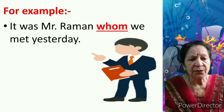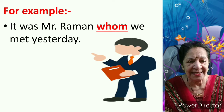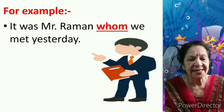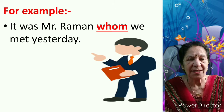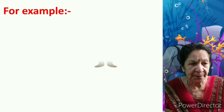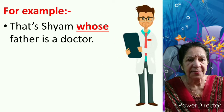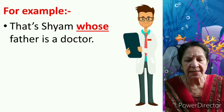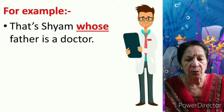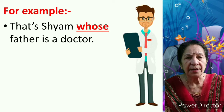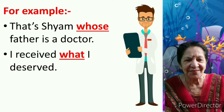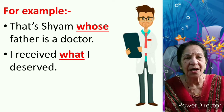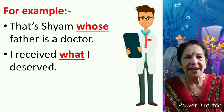For example: 'It was Mr. Raman whom we met yesterday.' The word 'whom' acts as both a conjunction and a pronoun in the sentence, so whom is a relative pronoun. Another example: 'That's Shyam whose father is a doctor.' The word 'whose' acts as a conjunction and is also a pronoun, so whose is a relative pronoun. Another example: 'I received what I deserved.' What is a conjunction in the sentence and is also a pronoun, hence it is a relative pronoun.